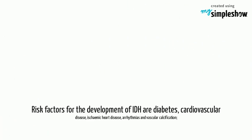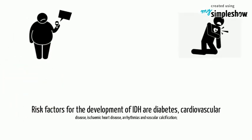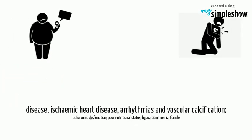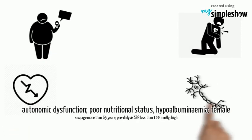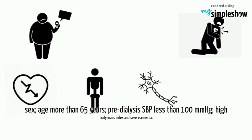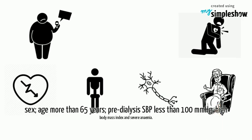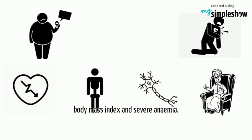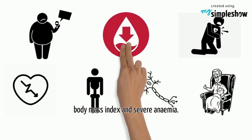Risk factors for the development of IDH include diabetes, cardiovascular disease, ischemic heart disease, arrhythmias and vascular calcification, autonomic dysfunction, poor nutritional status, hypoalbuminemia, female sex, age more than 65 years, pre-dialysis SBP less than 100 mmHg, high body mass index and severe anemia.